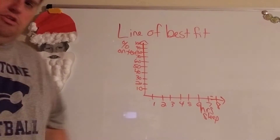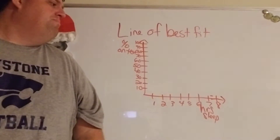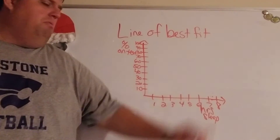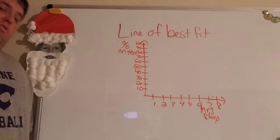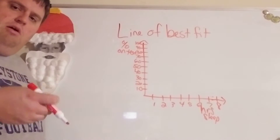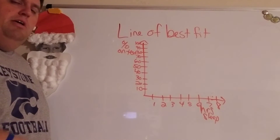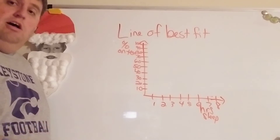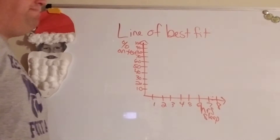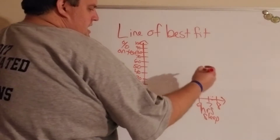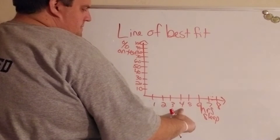Since I'm just drawing this on my whiteboard at home, we're going to estimate. That's one of the things about lines of best fit — if we want to write the equation, we're not all going to have the exact same answer. Our y-intercept should be similar, our slope should be similar, but they won't be identical unless we pick the exact same two points. Let's say our data looks something like this.